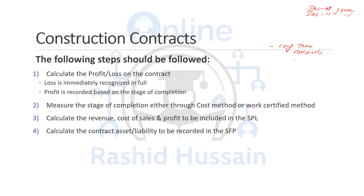Let's assume you're a company which has been given a contract to construct a football ground, and that football ground is going to take five years. This contract has been given to you by a government — let's assume we are having a World Cup in Qatar in 2022, and the construction is already going on regarding the football grounds. You will be getting a fixed contract price.